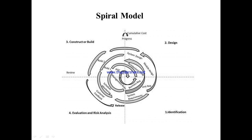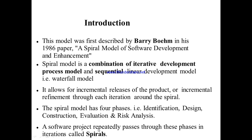The spiral model uses a spiral shape in the software development process. It is divided into four quadrants, representing four phases, and these four activities are performed iteratively, continuing until the final delivery of the product.